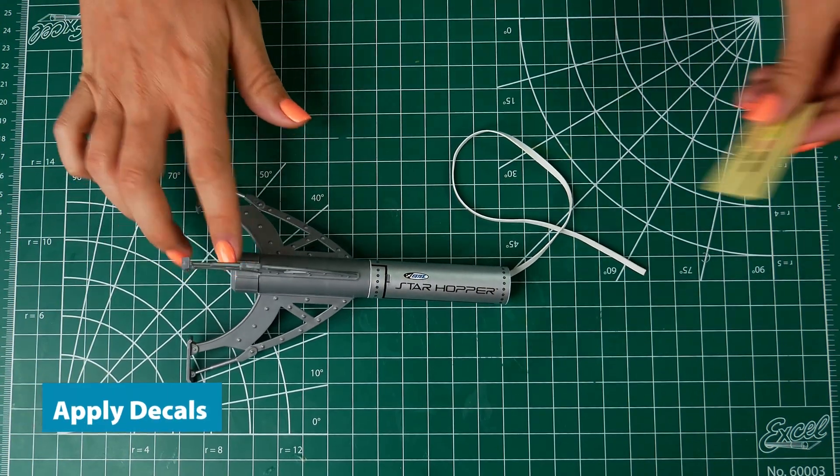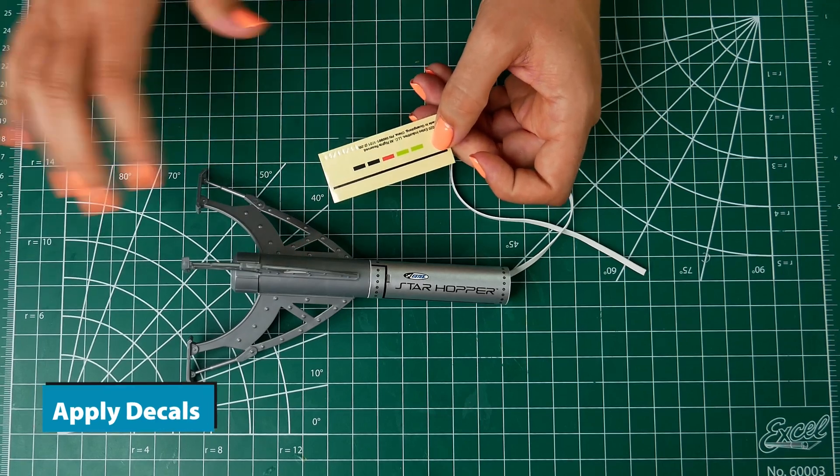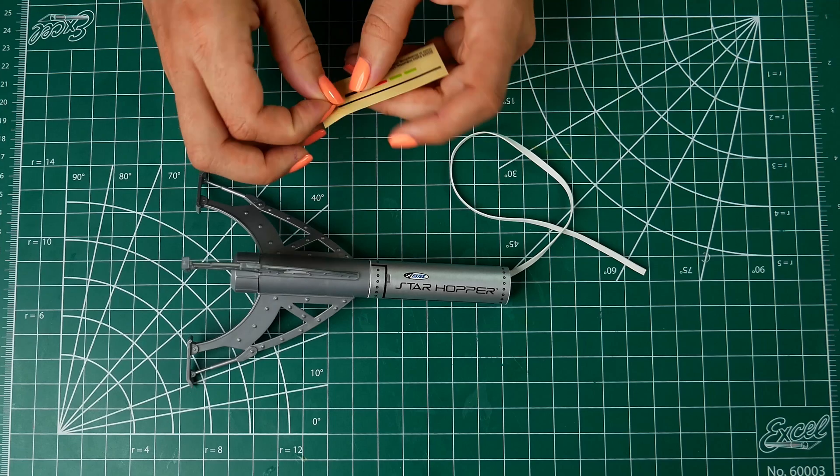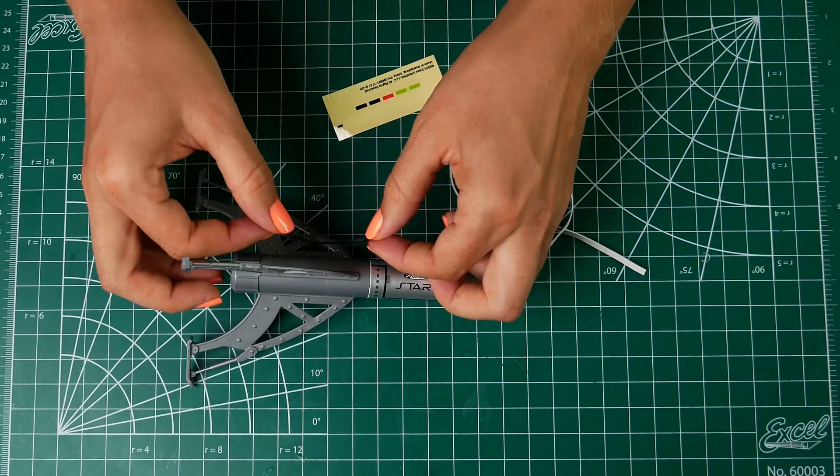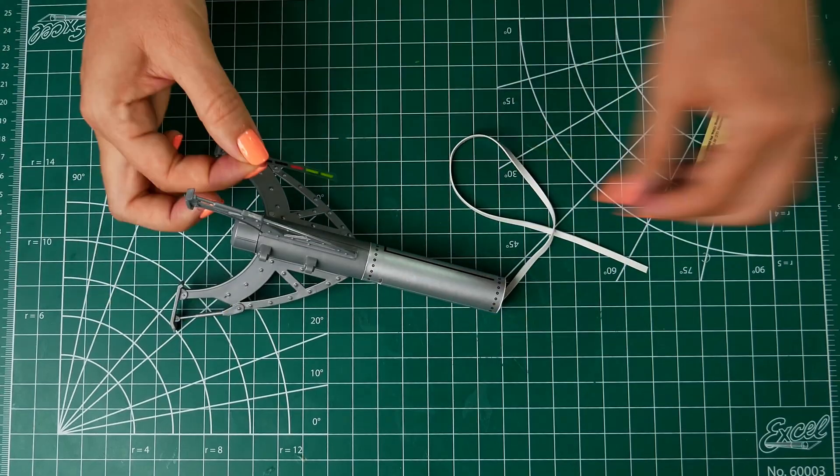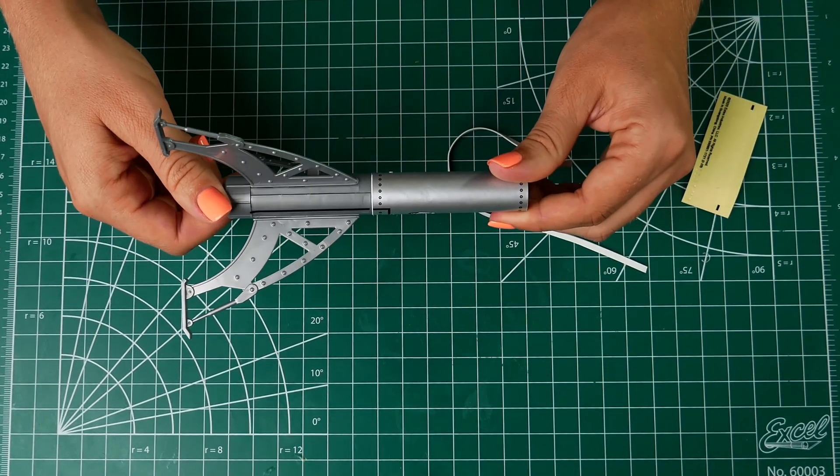All right. After your fins and retainer ring are on, next step is we're going to put on our decals. So refer to your instructions if you want to make sure they match the picture or put them wherever you want. Now your decals are on.